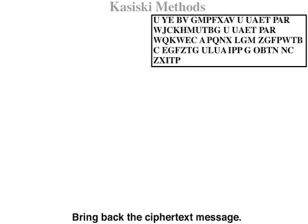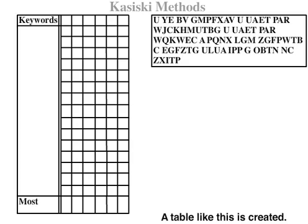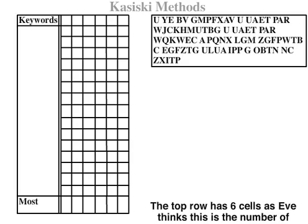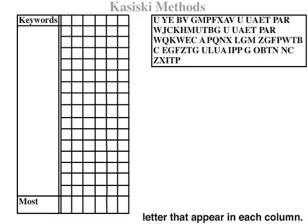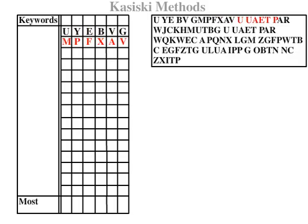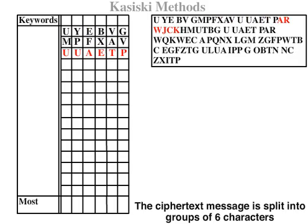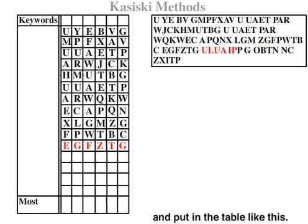Eve brings back the ciphertext message and creates a table. The top row has 6 cells, as Eve thinks this is the number of characters in the keyword. The bottom row is the most common letter that appears in each column. The ciphertext message is split into groups of 6 characters and placed in the table.